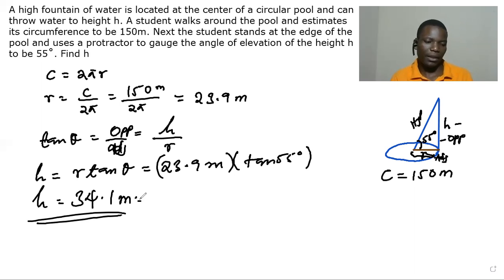So this is the height h to which this fountain at the center of a circular pool can be throwing water to that height of 34.1 meters.